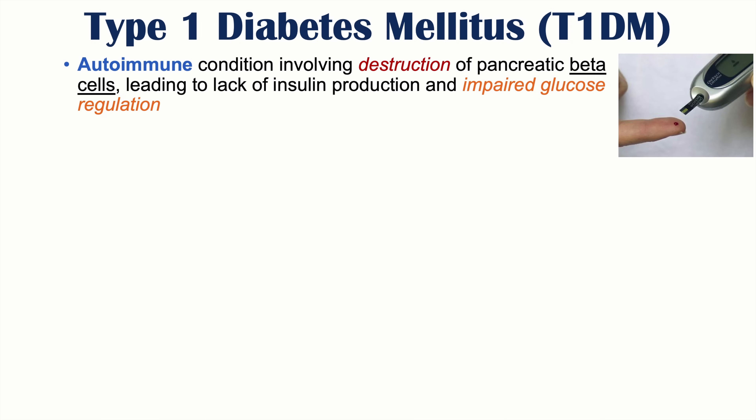Type 1 diabetes is an autoimmune condition, which means that the patient's own immune system attacks the patient's own tissues. In this case, it attacks the cells within the pancreas — the beta cells — which are responsible for producing insulin. Once enough beta cells have been destroyed, the pancreas is not able to produce enough insulin to regulate glucose, leading to impaired glucose regulation.